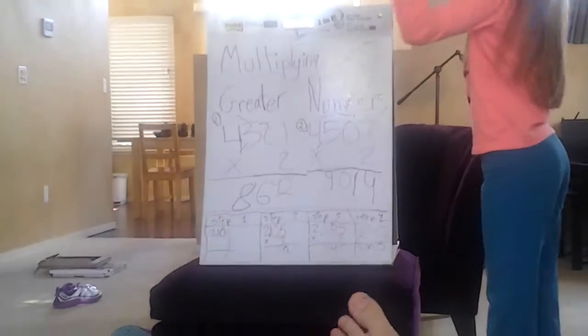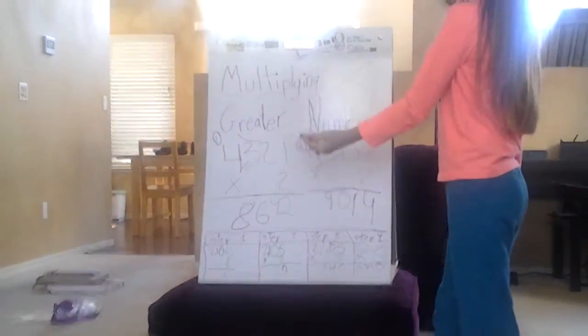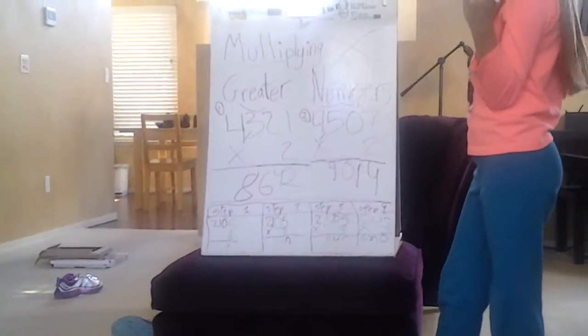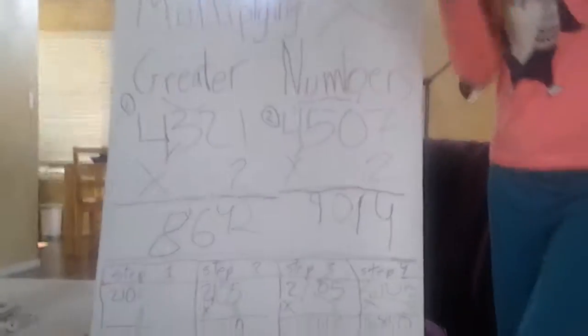So the answers to our two questions: 4,321 times 2 is 8,642, and 4,357 times 2 is 9,714. Cut!